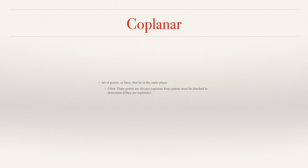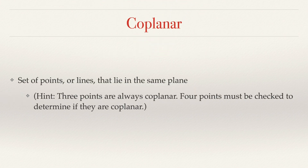Next word — you might be able to guess — coplanar. Coplanar means points that lie on the same plane. Now, unlike lines, you actually can have up to three points that are guaranteed to always be coplanar. So as soon as you add a fourth point, that's when you have to check: is this still going to be flat?